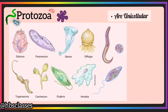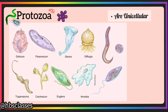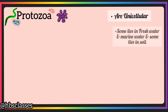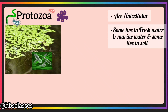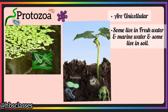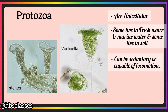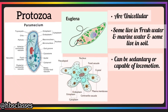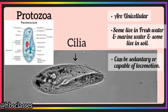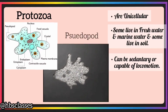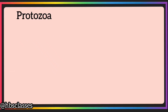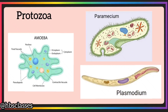Protozoa are unicellular microorganisms. They can move from place to place and vary in shape and form from very simple to complex structures. Some protozoa live in fresh or salty water and some live in soil. They move with the help of cilia, flagella, and pseudopodia. Amoeba, Paramecium, and Plasmodium are examples of protozoa.